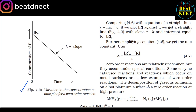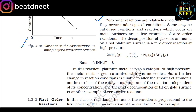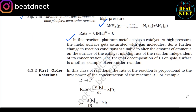Zero order reactions are relatively uncommon but occur under special conditions. Some enzyme-catalyzed reactions and reactions on metal surfaces are examples. The decomposition of ammonia on a hot platinum surface is a zero order reaction at high pressure: 2NH₃ → N₂ + 3H₂ at 1130 K on Pt catalyst; rate = k[NH₃]⁰ = k. Platinum metal acts as a catalyst; at high pressure, the metal surface gets saturated with gas molecules, so further change in reaction conditions is unable to alter the amount of ammonia on the catalyst surface, making the rate independent of its concentration. The thermal decomposition of HI on a gold surface is another example of a zero order reaction.